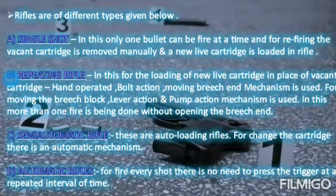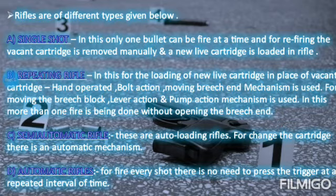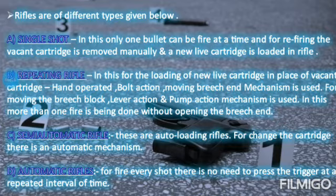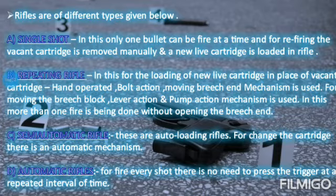Rifles are classified into four types. The first one is single shot. The second one is repeating rifle. The third one is semi-automatic rifle. The last one is automatic rifle. In single shot rifles, only one bullet can be fired at a time, and for refiring, the vacant cartridge is removed manually and a new live cartridge is loaded in the rifle.